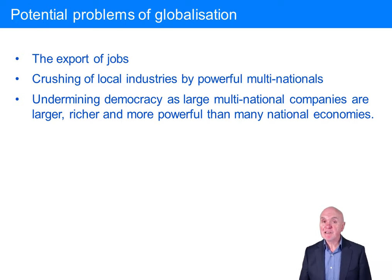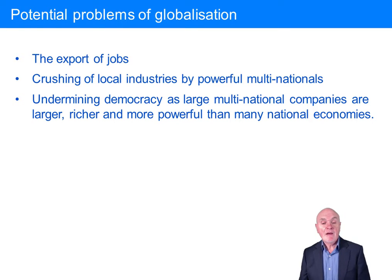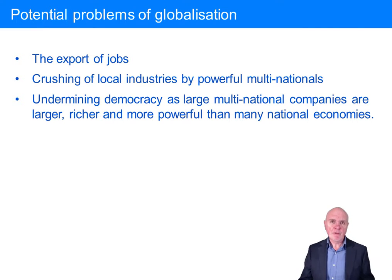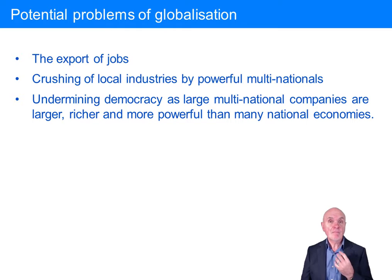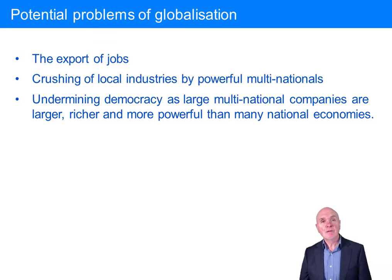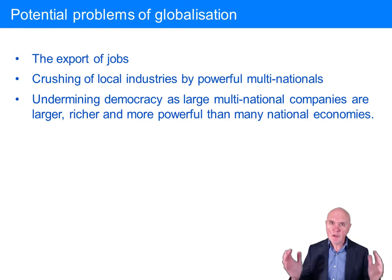Potential problems of globalisation: perhaps the export of jobs, which we've mentioned. The crushing of local industries by powerful multinationals. There are people who vehemently disagree with globalisation — they say it means everybody ends up with the same kind of product and the same specifications. Local producers who made perfectly fine items — in many ways better items — get swamped because of the economies of scale and the huge spending power of large companies. You lose the heterogeneity of products; everything ends up being rather the same and choice is diminished.